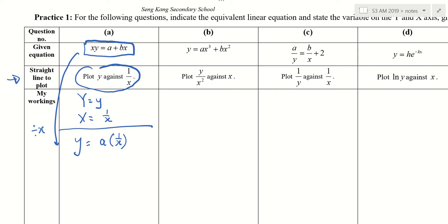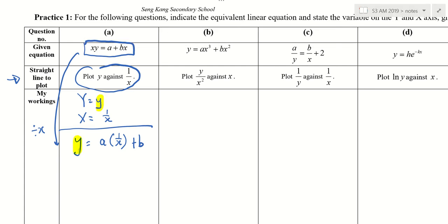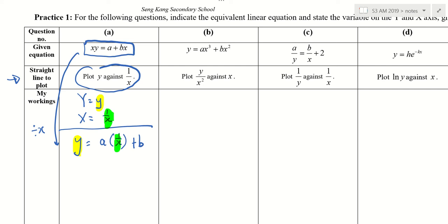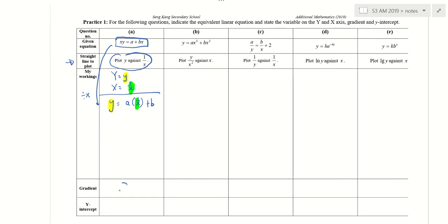So you check again. Do I have my big Y? Yes. My big X? Also yes, right? So therefore, I can conclude my M and my C. So my M, my gradient is A. My Y-intercept is B. Okay? Where's the direction? The direction is always the XY.